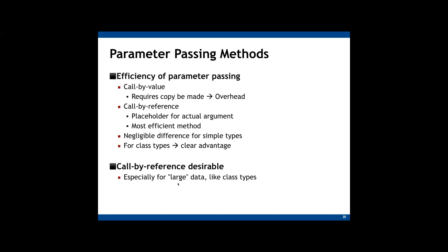A class is usually a large data type. It includes a number of member variables and functions, so it is larger than simple data types such as int or double. If we use call by value for class type parameters, a copy of the class argument is passed to the callee function, so there will be two copies of the class argument. But if we use call by reference, only the address is passed, so there will be just one copy. This is why call by reference is more efficient for larger data types.